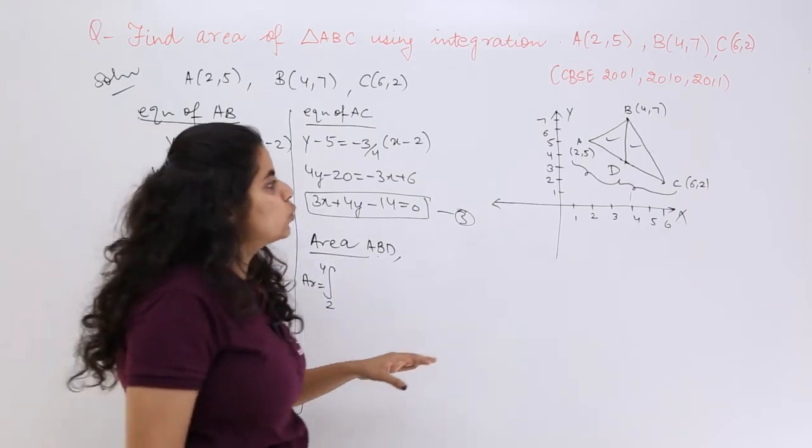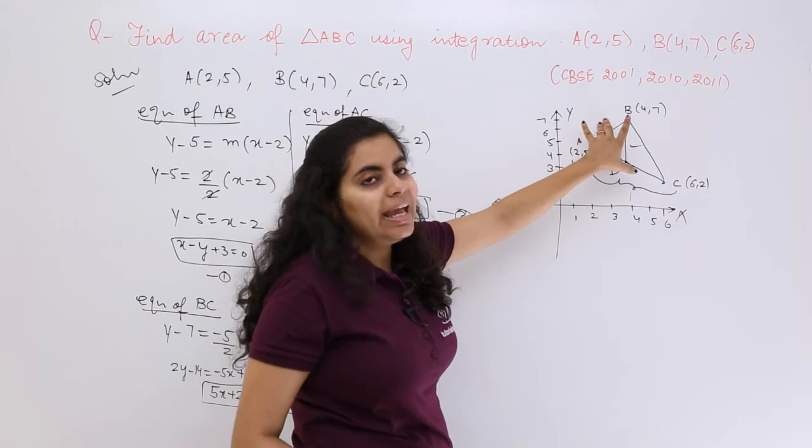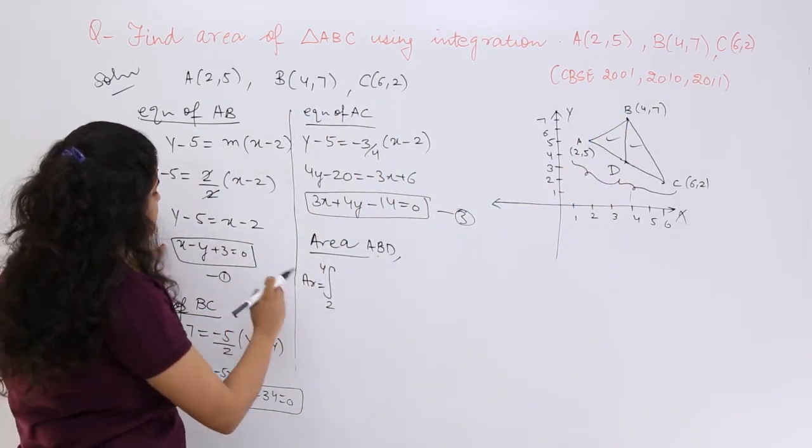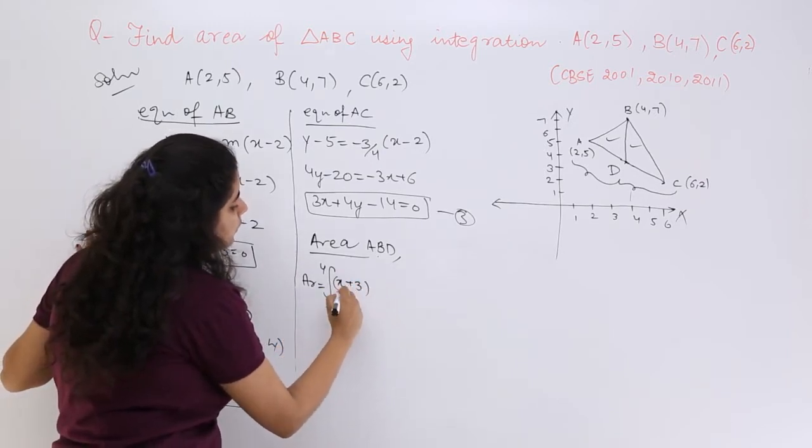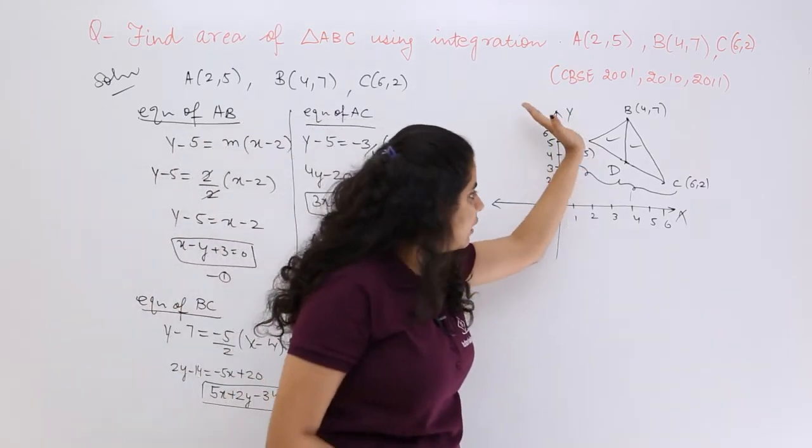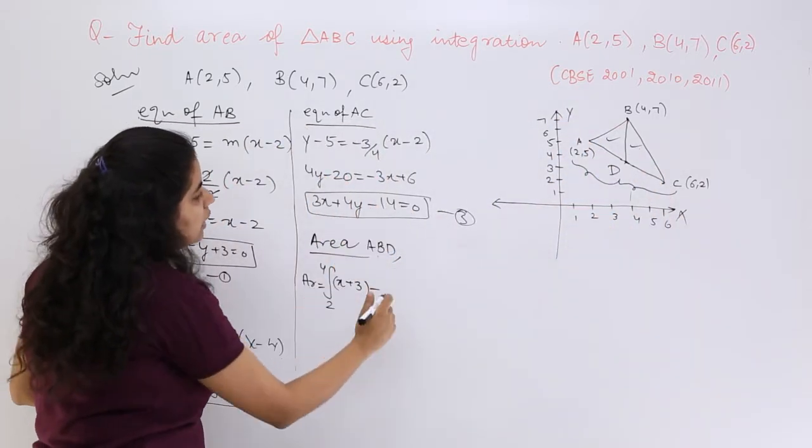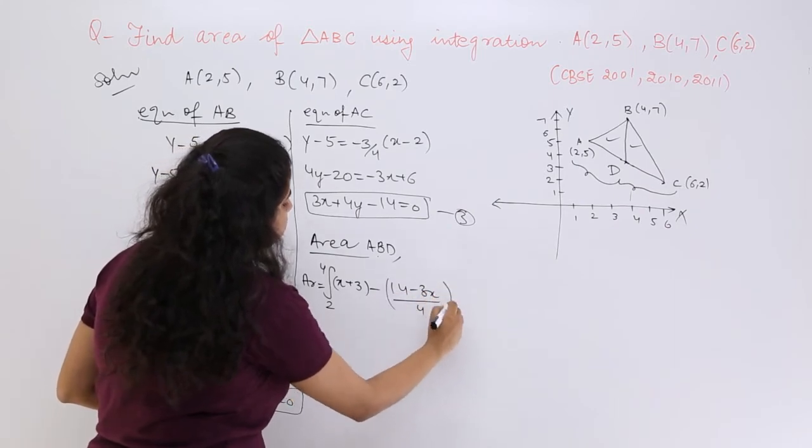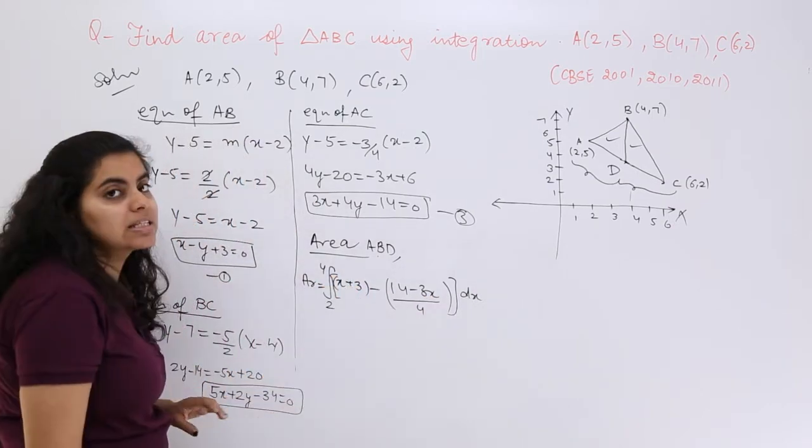So if I have to see what is the area, I write area of ABD. Area of ABD is the integral from 2 to 4, and that is the area. 2 to 4, upper minus lower, y₂ - y₁ for AB. What is y₂ from here? It is x + 3, minus y₁. y₁ is the lower, which is equation of AC. So what is y from here? It is (14 - 3x)/4, right? And that is dx.